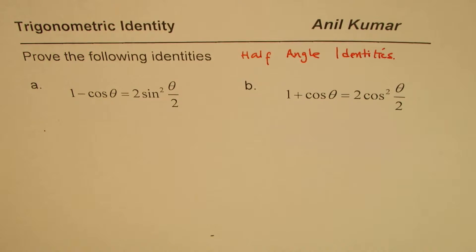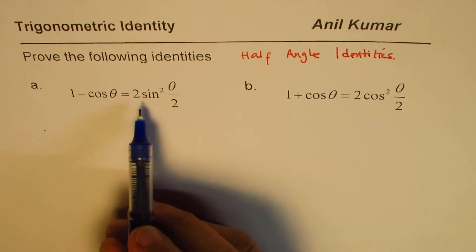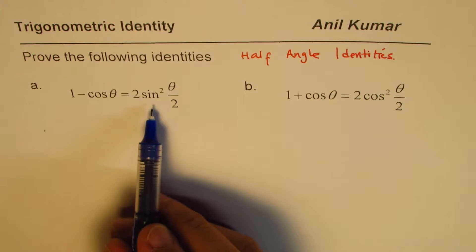So what we are going to do is, we are going to use what we have learned for normal identities, and thereby we will prove this.